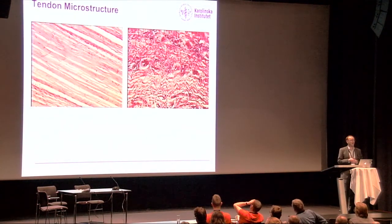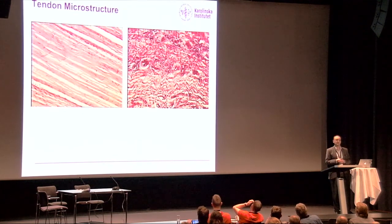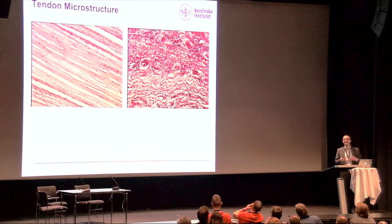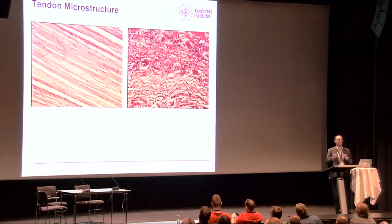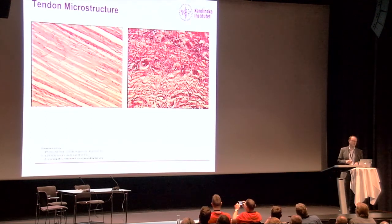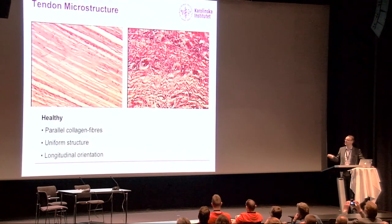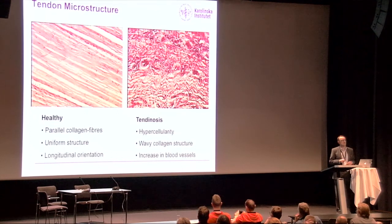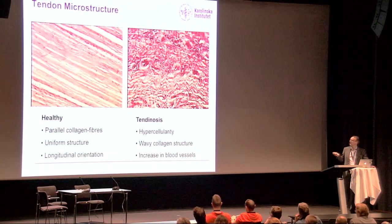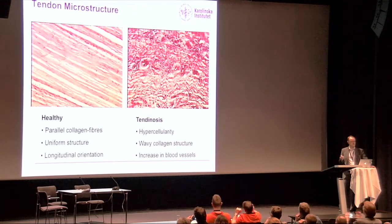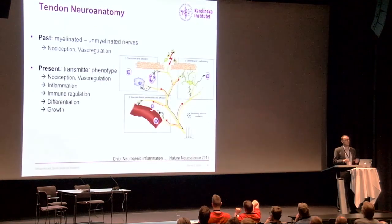Let's look more closely at the pathology from a macro to micro perspective. The healthy tendon should be shiny white, fiber-elastic, and has high resistance to mechanical stress, whereas the pathologic tendon is grey, hemorphous, and has increased risk of rupture. At the microstructural level, the healthy tendon has parallel collagen fibers longitudinally oriented along the mechanical axis of loading, whereas tendinosis has hypercellularity, a wavy collagen structure, and increase in blood vessels.